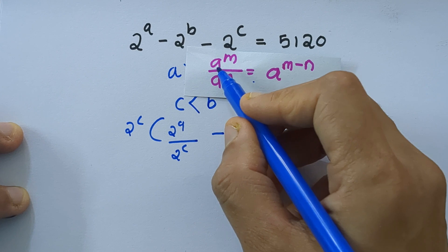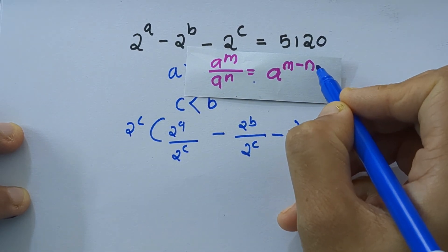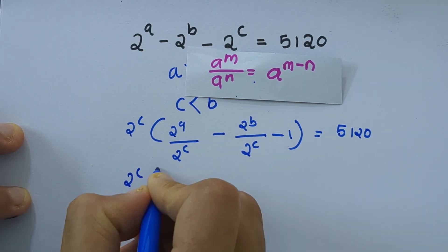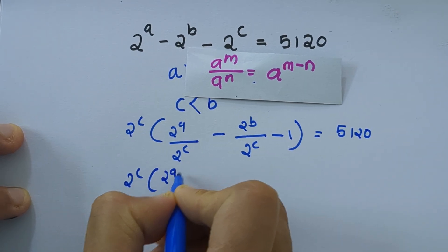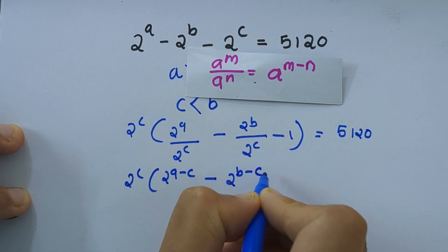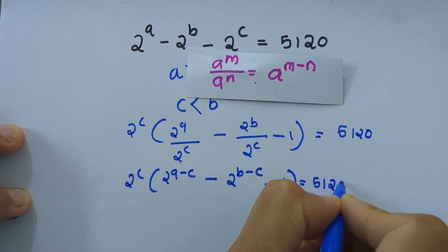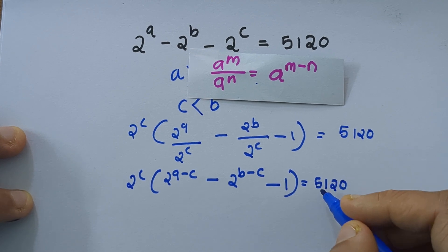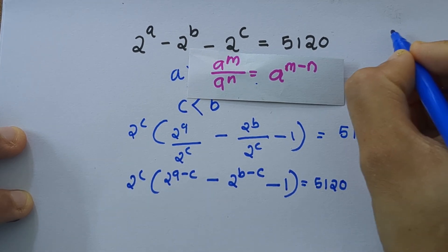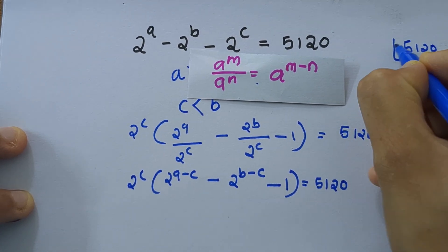We know that a raised to m divided by a raised to n equals a raised to m minus n. Applying this here, we get 2 raised to c into 2 raised to a minus c minus 2 raised to b minus c minus 1, equal to 5120.